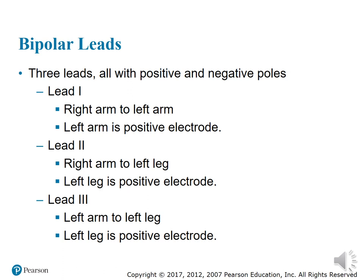Bipolar leads are called bipolar because they can have either a negative or a positive pole. The three leads that make up bipolar leads are Lead 1, Lead 2, and Lead 3. Lead 1 reads the electrical activity from the right arm to the left arm, making the left arm positive and the right arm negative. Lead 2 reads from right arm to left leg, putting the left leg in a positive pole and the right arm in a negative pole. Lead 3 reads from left arm to left leg, putting the left arm negative and the left leg positive.